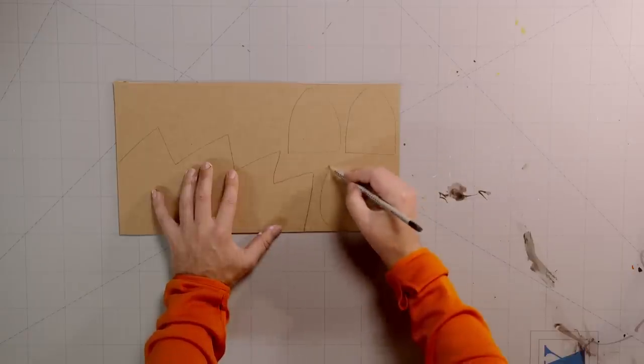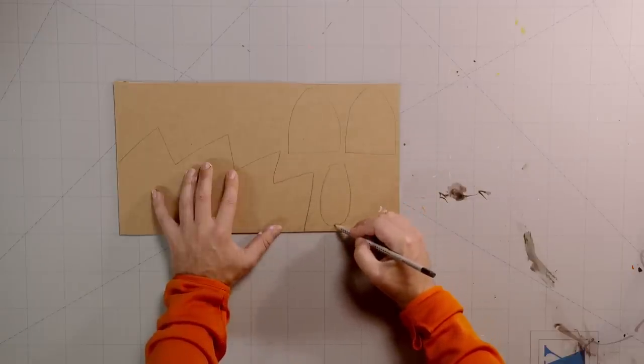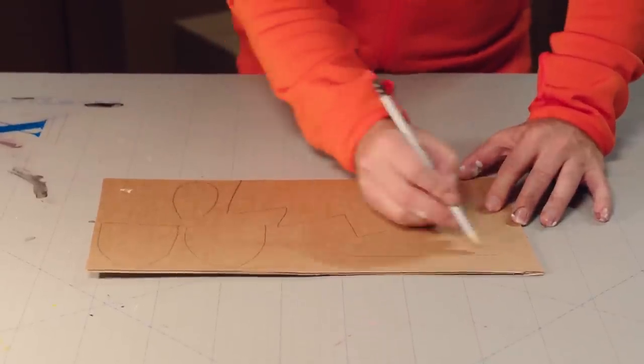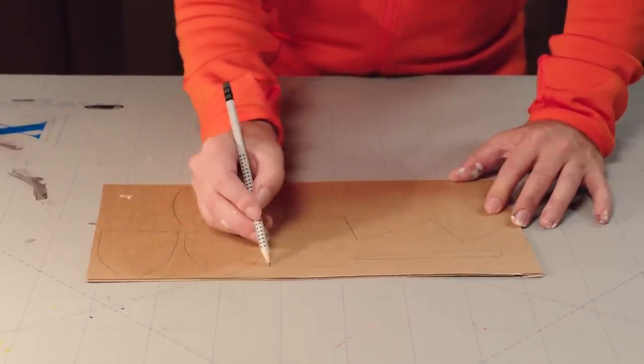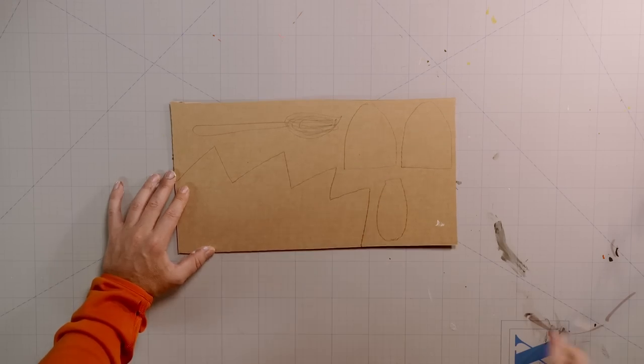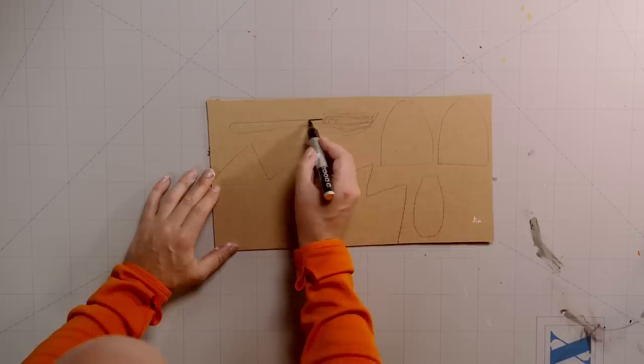Tongue and a tail. Grab your marker pen and draw over the tail and the tongue.